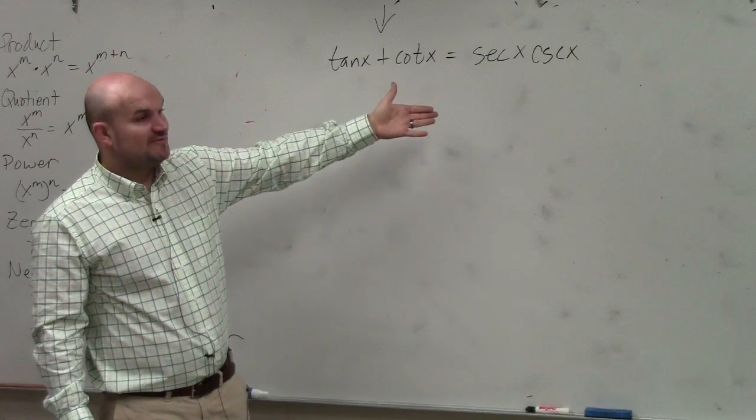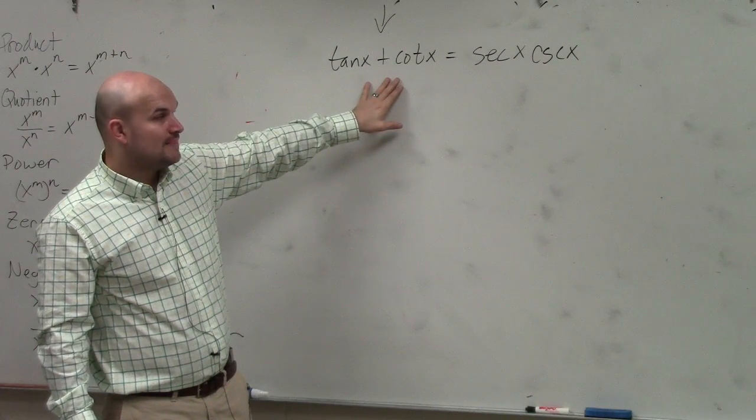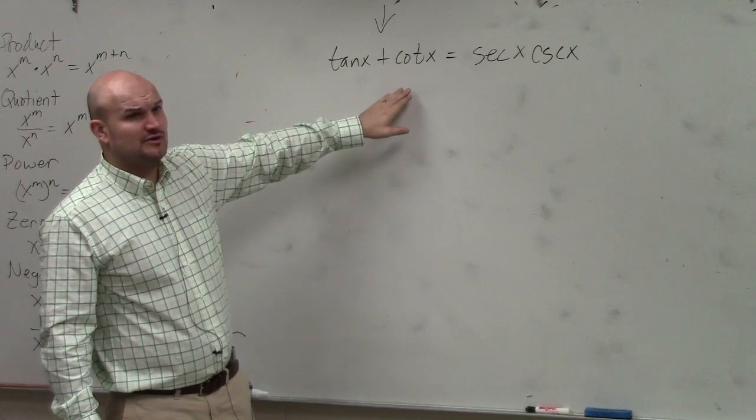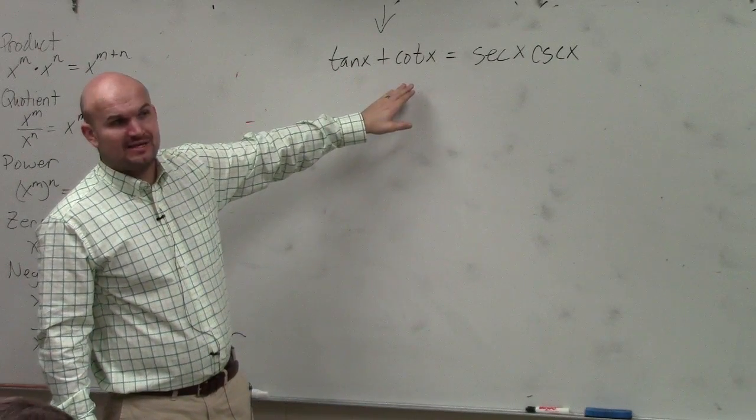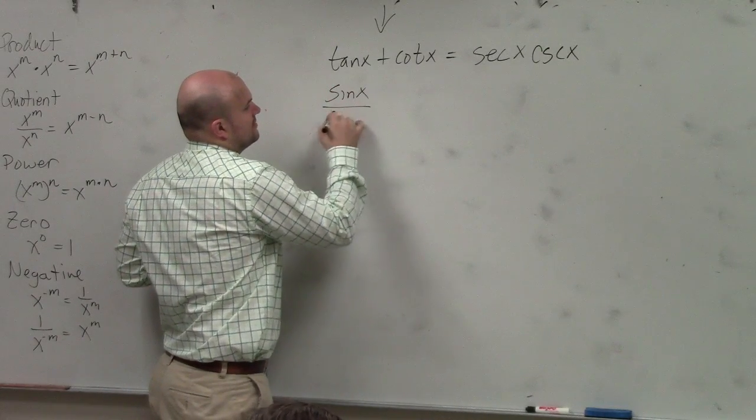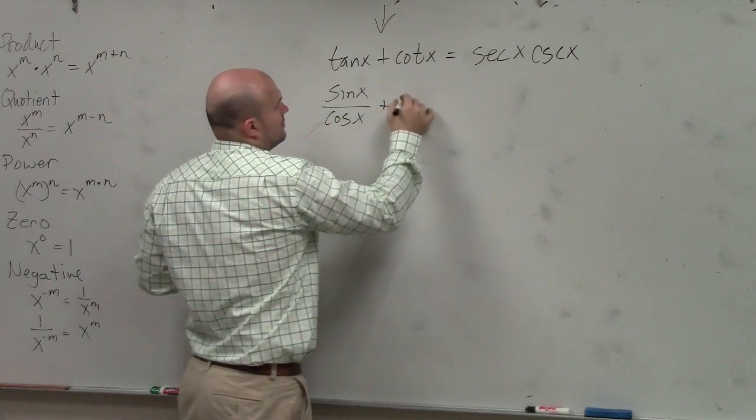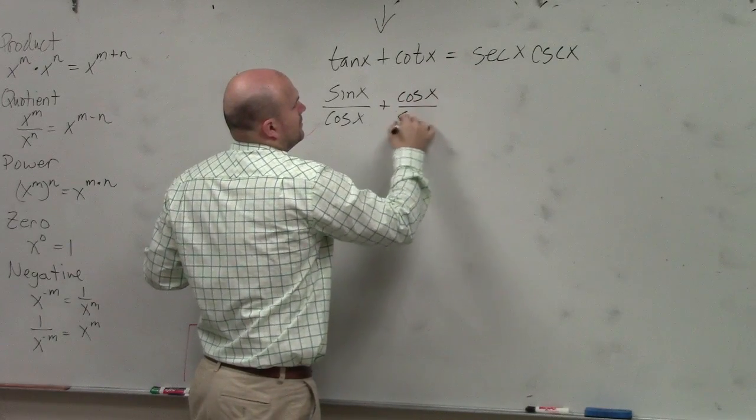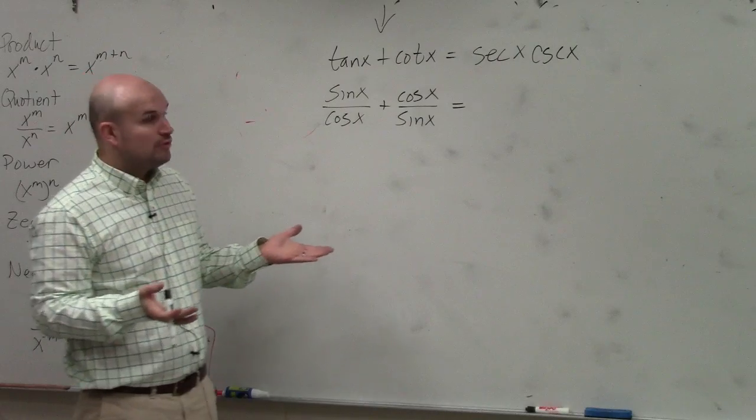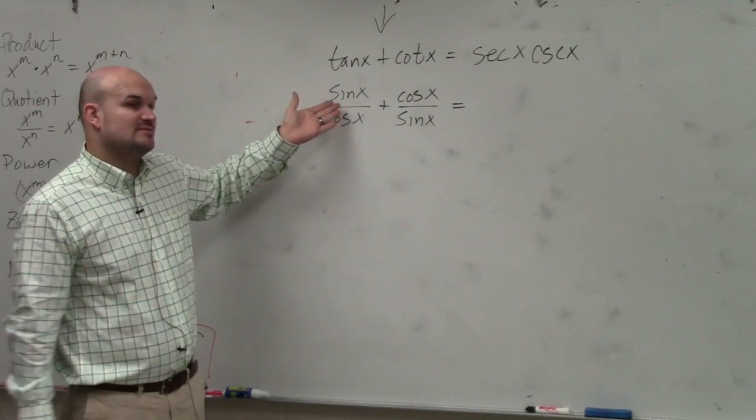The next thing is to simplify this. So I'm just going to simplify the left side. I'm going to simplify by using my operations. Well, to add tangent of x and cotangent of x, I know those are not like terms, so I can't add them. However, if I write them in terms of sines and cosines, now all I did was use my quotient identities, and I rewrote them in terms of sines and cosines.